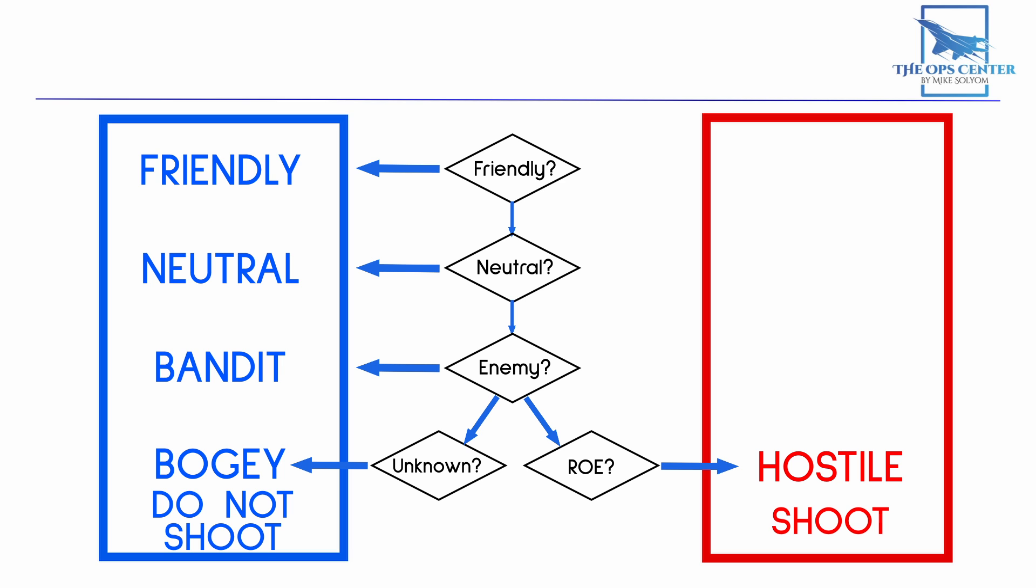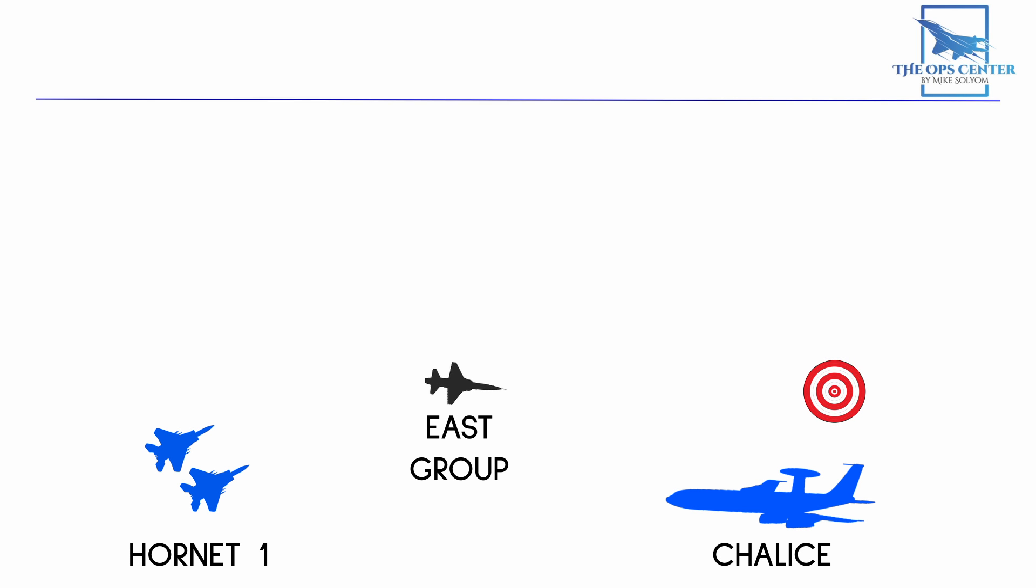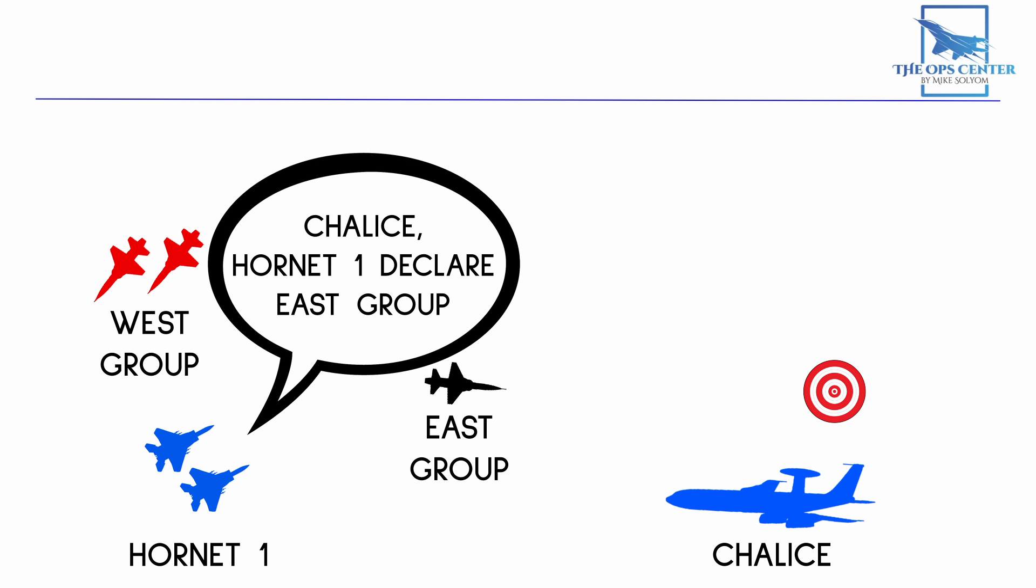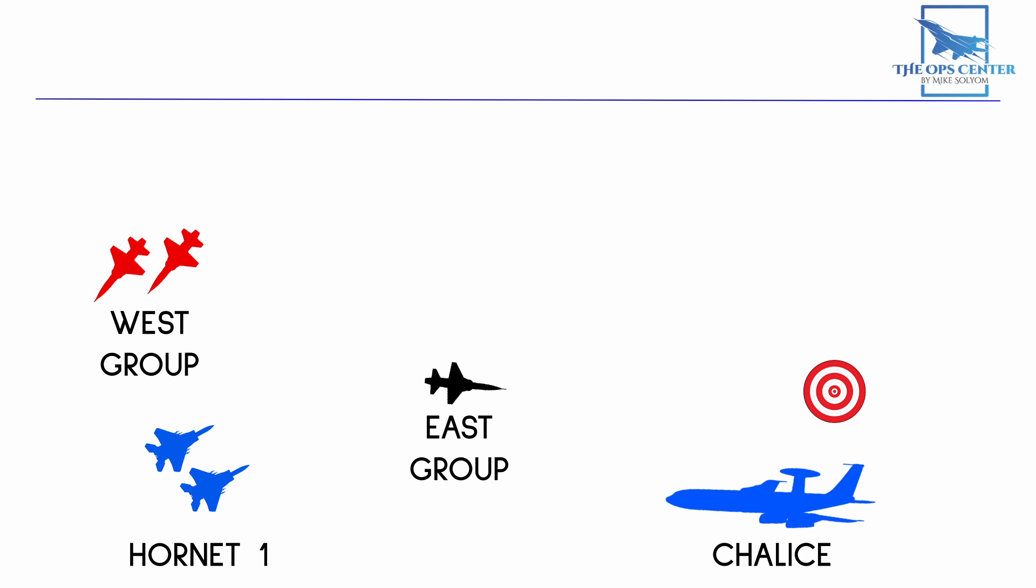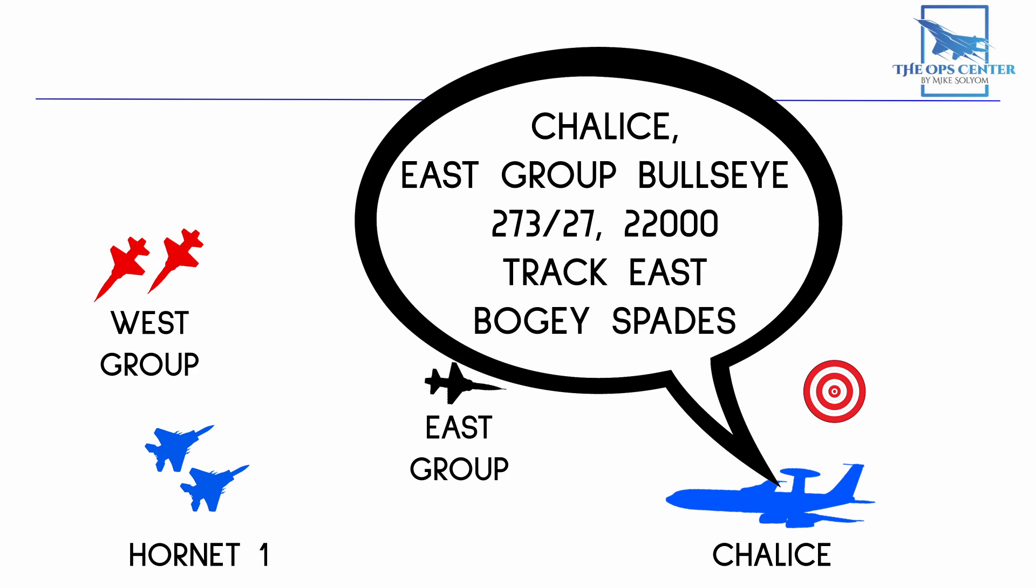Now let's take a look at how this might sound over the radio. In this scenario, a DCA patrol with the callsign of Hornet 1 is in contact with a controller named Chalice to make the following request. Chalice, Hornet 1, declare East Group. Hornet 1 is asking for the identity of the eastmost group in its lane. So Chalice electronically interrogates the East Group and gets no response from them. So the reply would go like this. Chalice, East Group, Bullseye 273-27, 22000, Track East, Bogey Spades. This last part, Bogey Spades, is Chalice saying that the interrogation was unsuccessful and so the affiliation is unknown.